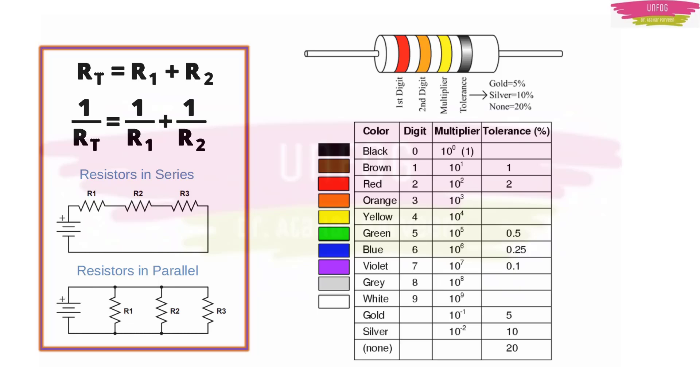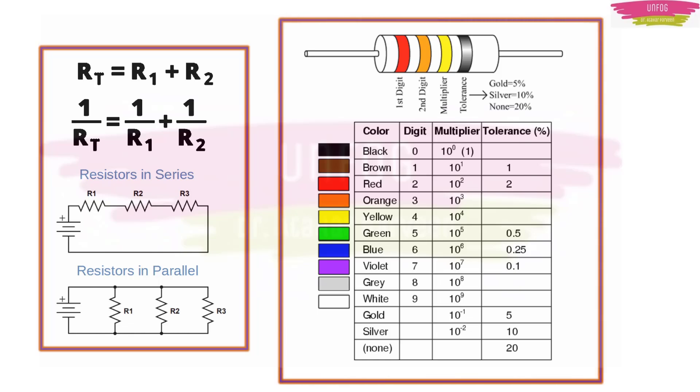And then when you talk about resistors, it is important for us to also understand about the color coding of the resistors. You should know the digit, the multiplier and the tolerance value, especially for gold and silver. And if it is none, also you should know the value. And to remember this color code, there is one trick: BB Roy of Great Britain had a very good wife.